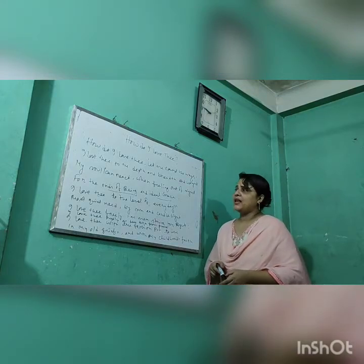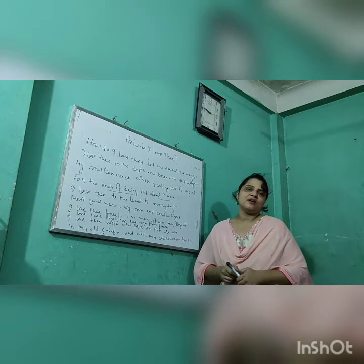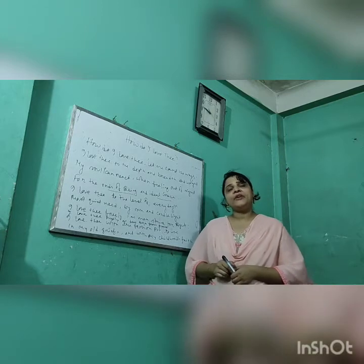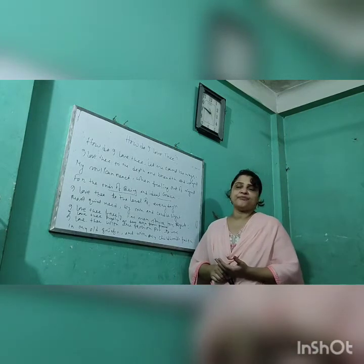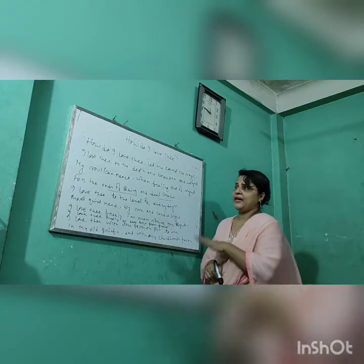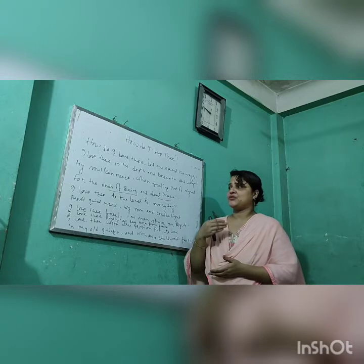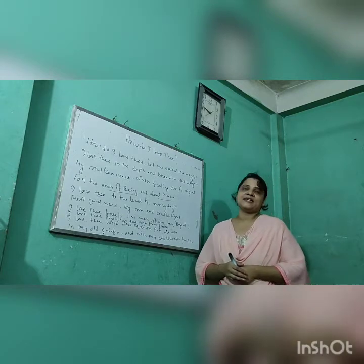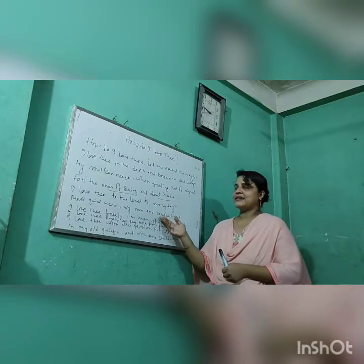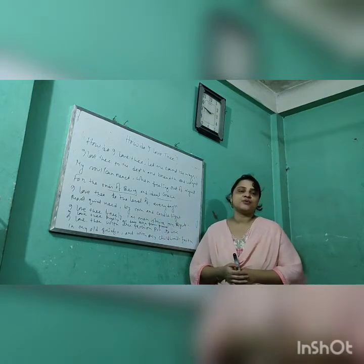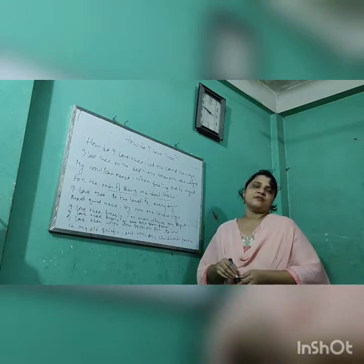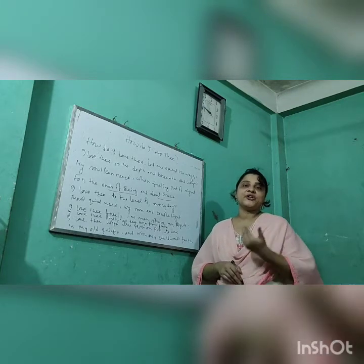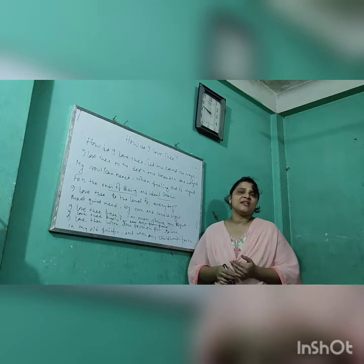'I love thee to the level of every day's most quiet need.' It indicates the urgency of things. Every day, for our living, we need certain things without which we can't live. She loves him like those everyday inseparable things. 'By sun and candlelight' — sun symbolises day and candlelight symbolises night. She loves her lover like day and night, without which we cannot imagine our life.